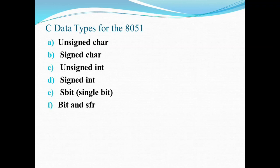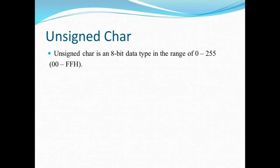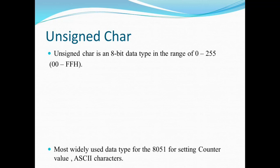First is unsigned character. Unsigned character is an 8-bit data type with a range of 0 to 255. In hexadecimal, it is equal to 00 to FFH.